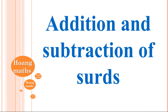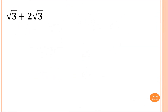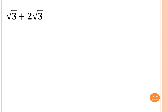Adding and subtracting surds is just like adding and subtracting algebra — we're collecting like terms, except with surds you have to simplify first if needed. For example, square root 3 plus 2 root 3 is just like x plus 2x equals 3x. So root 3 plus 2 root 3 equals 3 root 3. That's all — just collecting like terms.